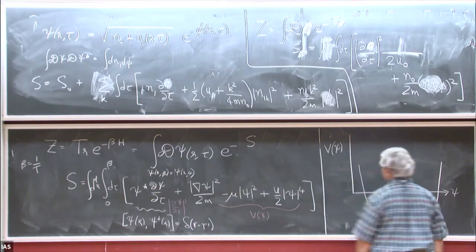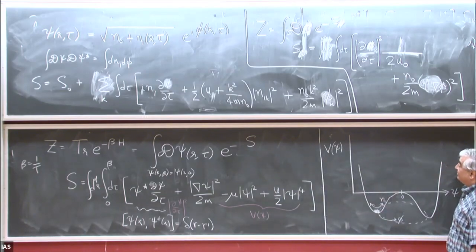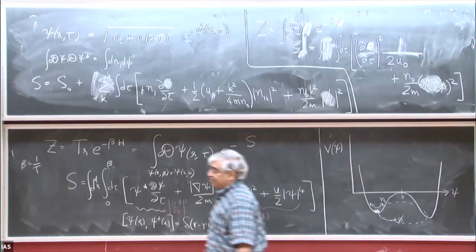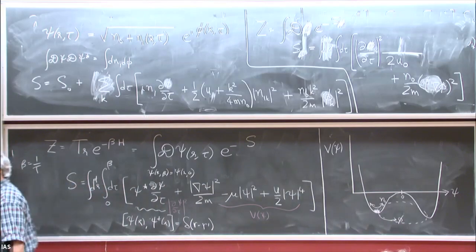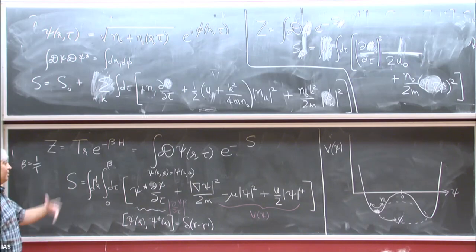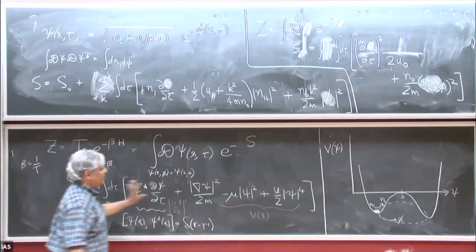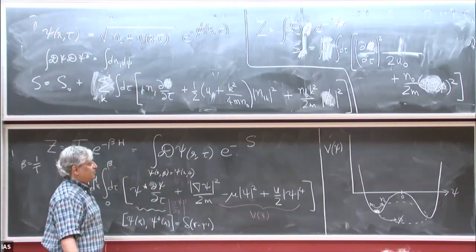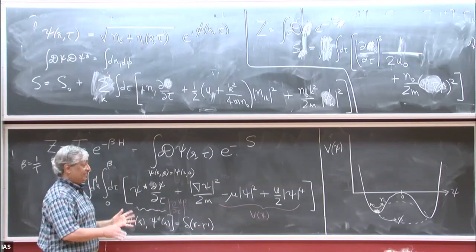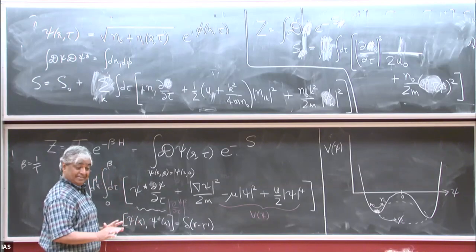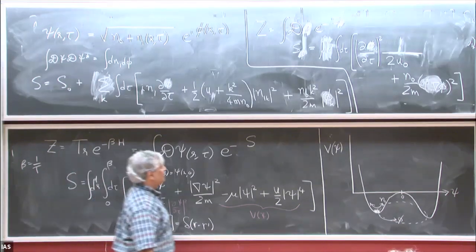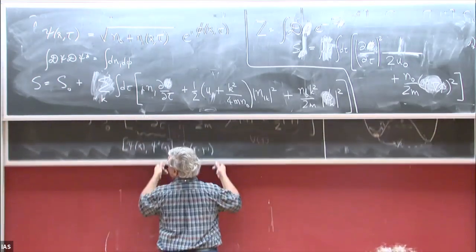For helium-4, U is not small, but nevertheless the theory I've presented is still morally correct. That was a quite important source of much confusion historically.